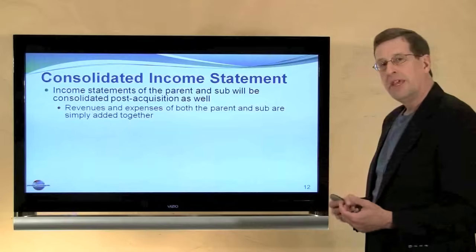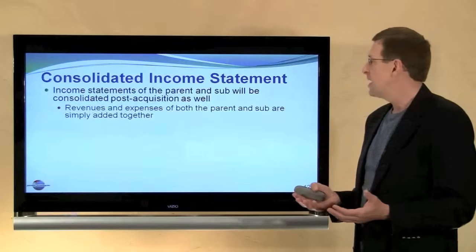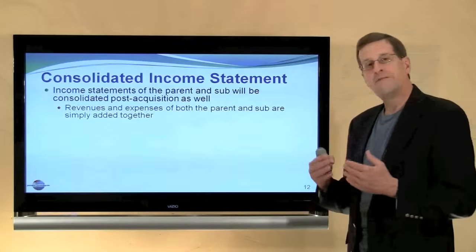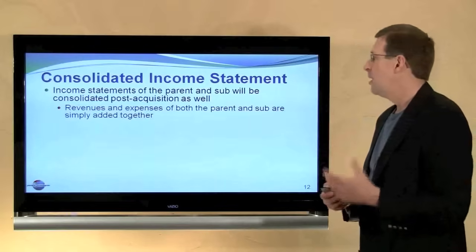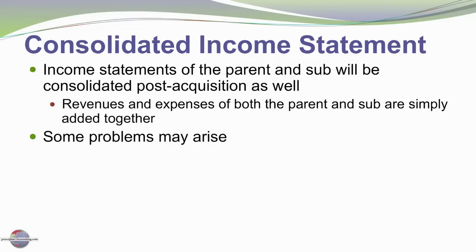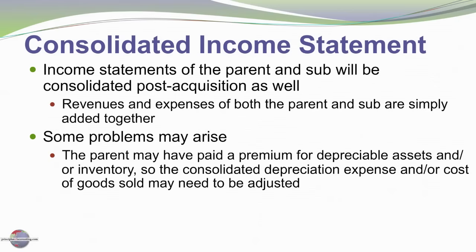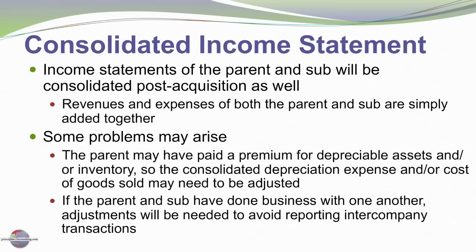There is also the need for a consolidated income statement. The income statements of the parent and subsidiary are consolidated from the date of acquisition forward — post-acquisition. Revenues and expenses are generally added together. There are certain issues to consider, however: the parent may have paid a premium for depreciable assets and inventory, so consolidated depreciation expense and consolidated cost of goods sold may need to be adjusted to reflect the basis implicit in the business acquisition. If the parent and sub have done business with one another, we would also want to adjust for intercompany transactions.